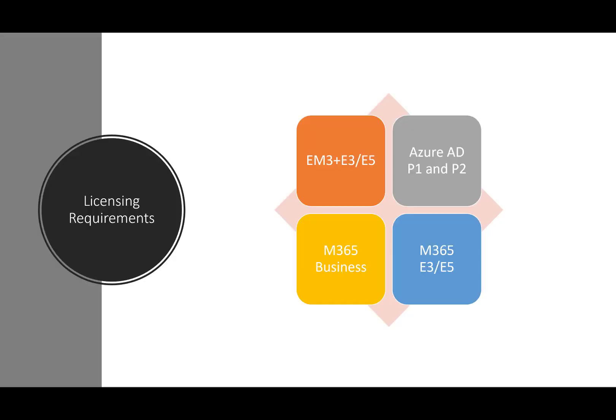For conditional access, here are the basic licensing requirements. Many of you with a silver or gold competency are familiar with the EMS E3 and E5 licensing you get complimentary with those Microsoft competencies. EMS E3 includes Intune and Azure AD P1, which is where conditional access lives. Azure AD P1 and P2 are also available as standalone licenses at $6 for P1 and $9 for P2.